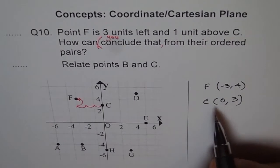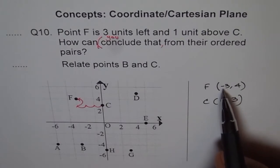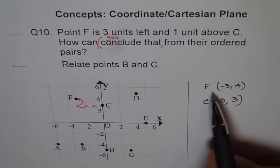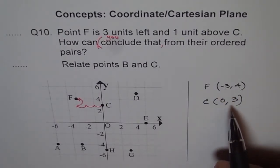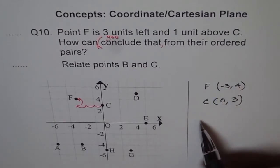Now, if you have to go from C to F, then horizontally you have to move from 0 to -3. That means minus means 3 units left, correct? And then vertically you have to move from 3 to 4, 1 unit above. Do you see that? That is how we conclude.